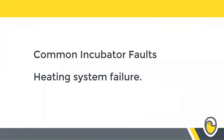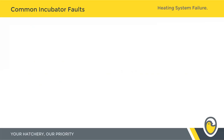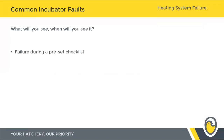The first fault we're going to touch on today is a heating system failure. In these instances, somebody in the hatchery comes to the maintenance staff or hatchery manager to make them aware that there is a heating system failure on one of the incubators — either the setters or the hatchers. In an ideal world, all faults would be spotted before they impact your incubation cycle, before they affect your hatchability or chick quality.